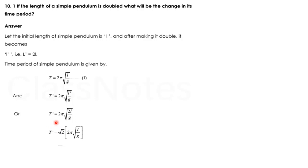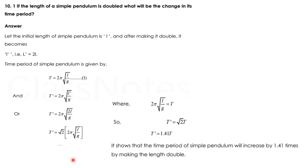And we get this equation. Now, taking √2 as common, the equation left is 2π√(L/g). Where 2π√(L/g) equals T, capital T, that is time period. So we put T here.